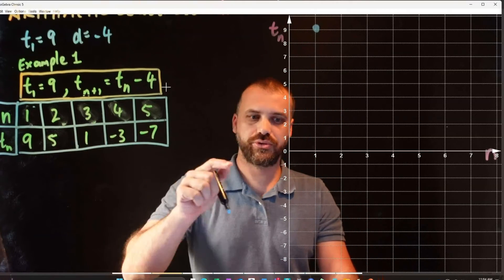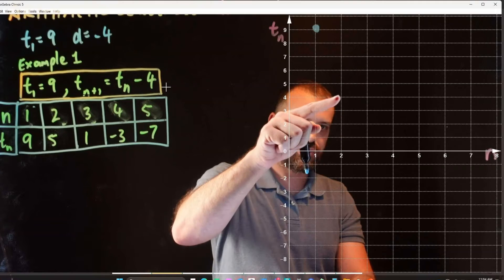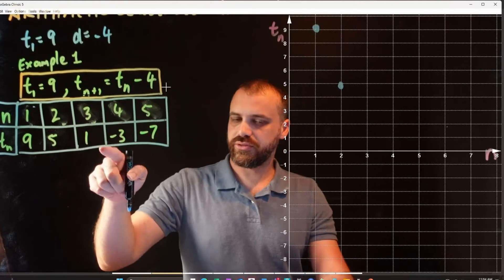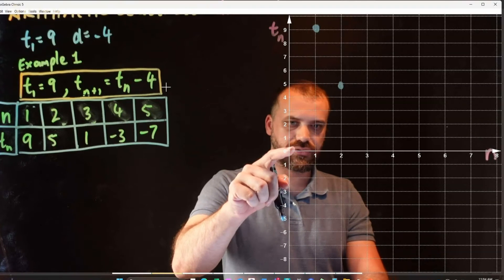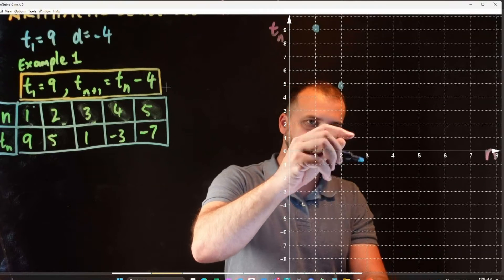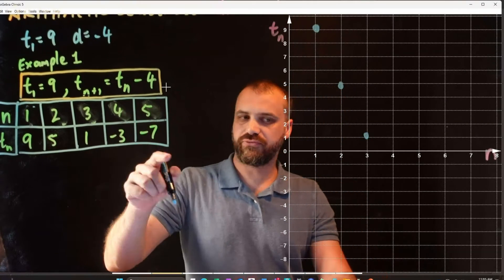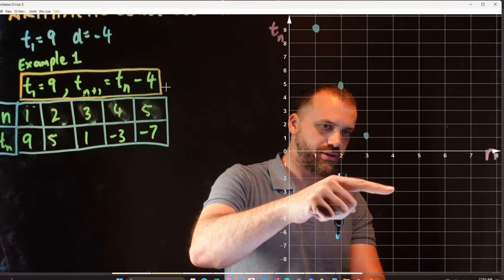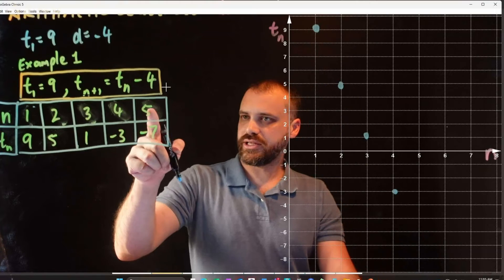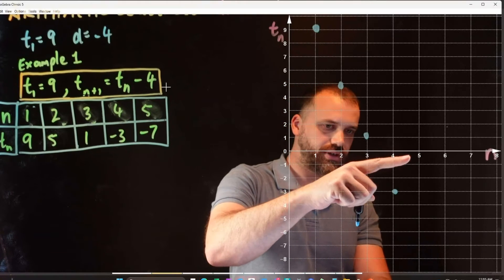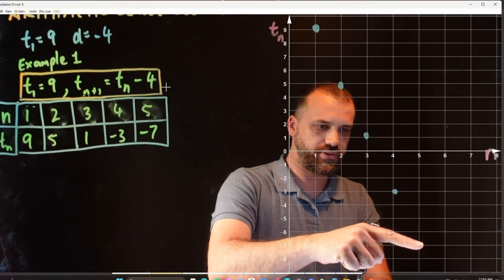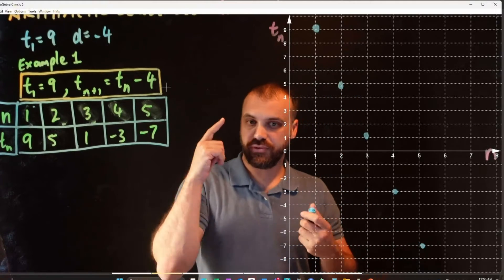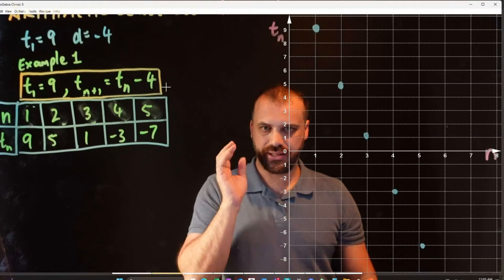Our second point: (2, 5) — right there. Our next point: (3, 1) — right there. Our next point: (4, negative 3) — right there. And the next point: (5, negative 7) — right there. We have graphed our arithmetic sequence.